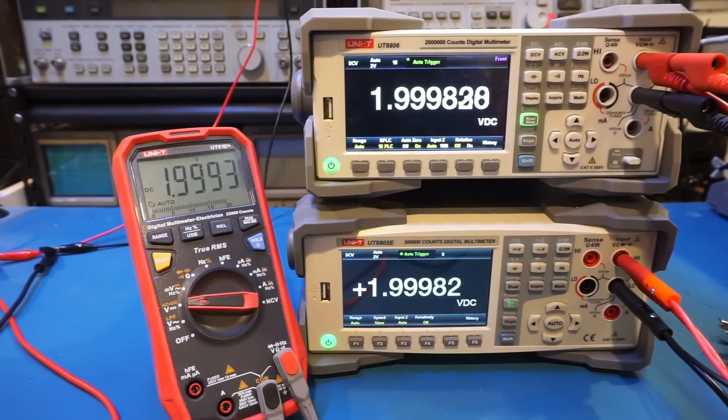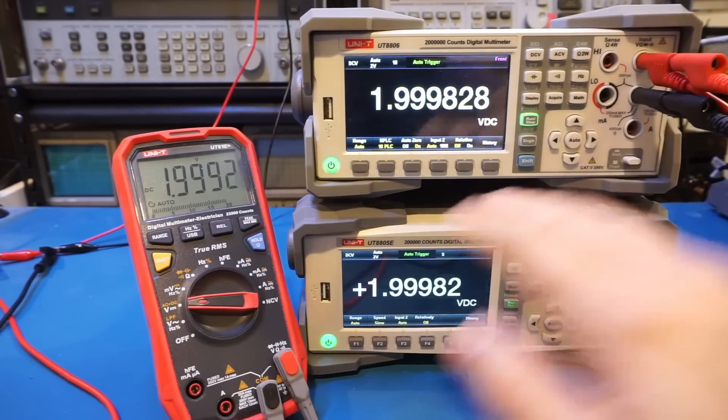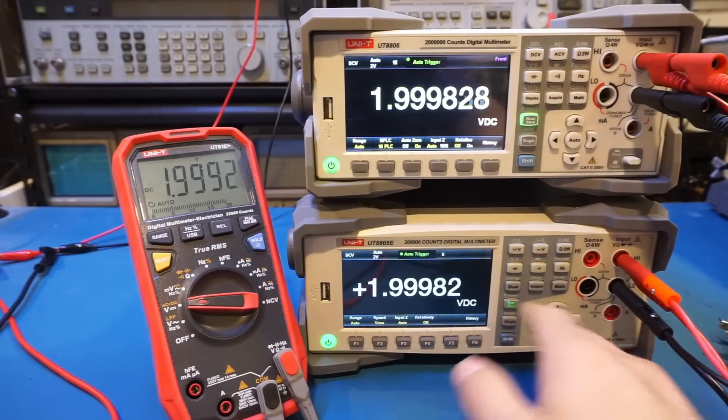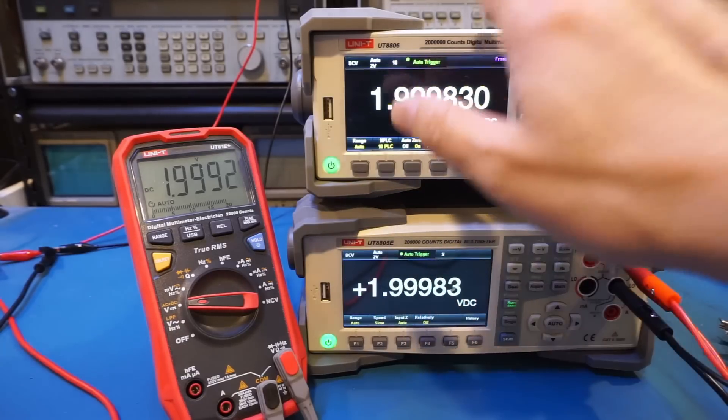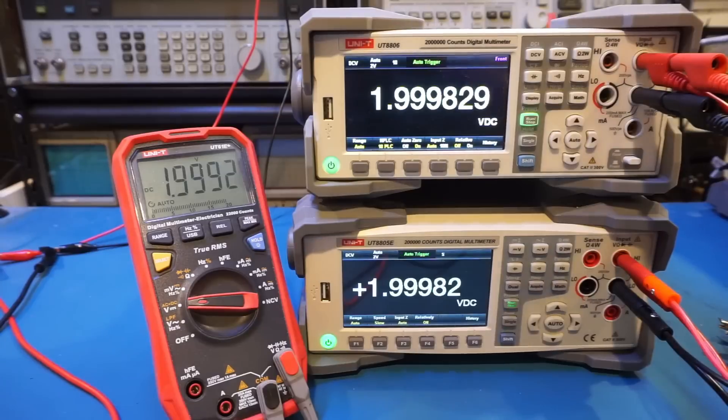Now let's talk about digits. You often hear about 3.5-digit meter, 4.5-digit meter, so on and so forth. The UT8805E is, for instance, a 5.5-digit meter, and the UT8806E is a 6.5-digit meter.